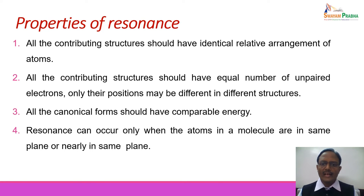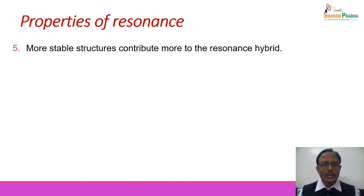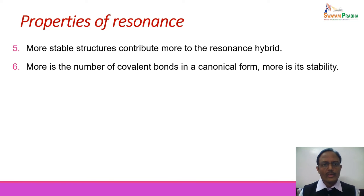Resonance can occur only when the atoms in a molecule are in the same plane or nearly the same plane, as seen in benzene, which is a planar molecule. Carbonate ion is also a planar ion, so planar molecules have a greater probability of showing resonance. More stable structures contribute more to the resonance hybrid, and less stable structures contribute less. More covalent bonds in a canonical form means greater stability, because energy is released on bond formation, and more bonds lead to greater stability.